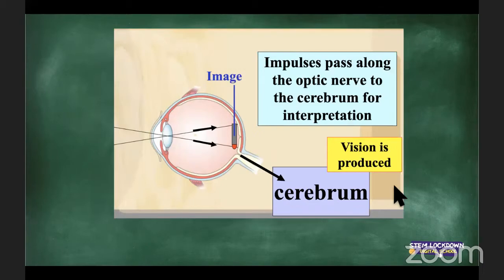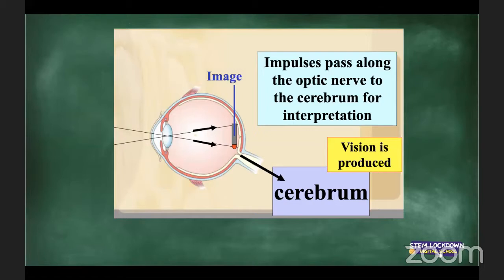Impulses pass along the optic nerve to the cerebrum for interpretation — vision is produced in your cerebrum. Your eyes only take in the image, but your brain makes you see. So if the brain area responsible for vision is damaged, even if your eyes are working perfectly, you will have problems with vision.